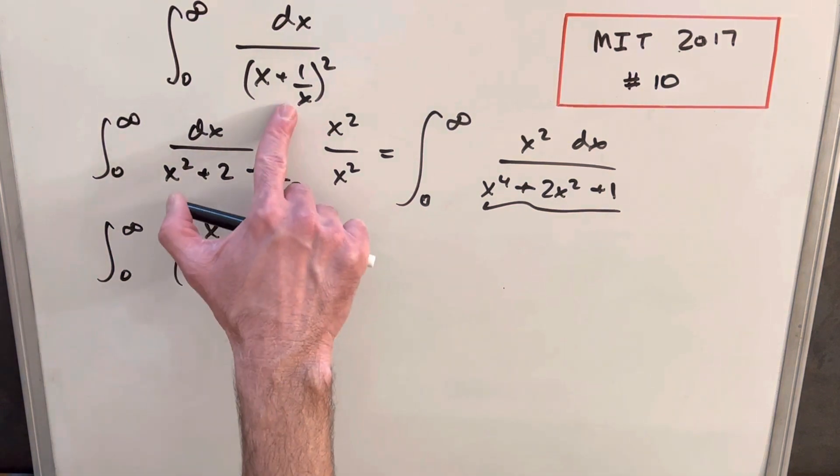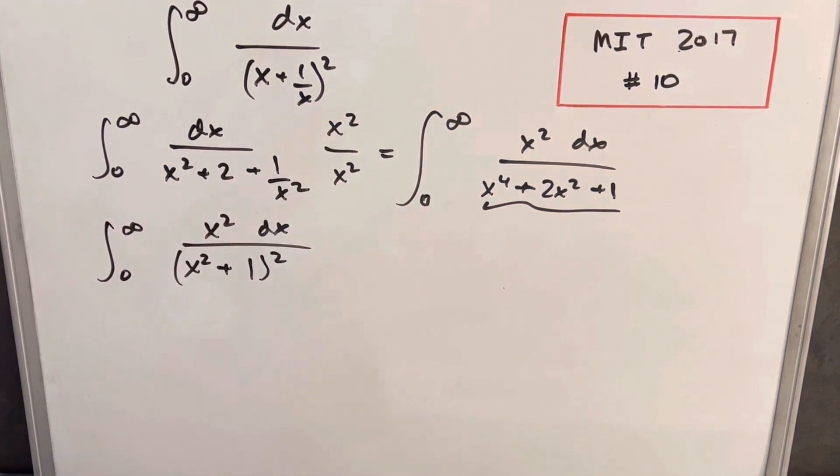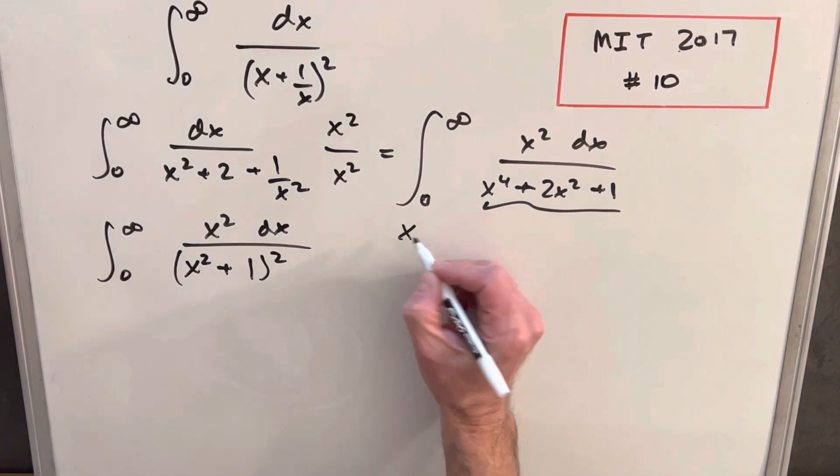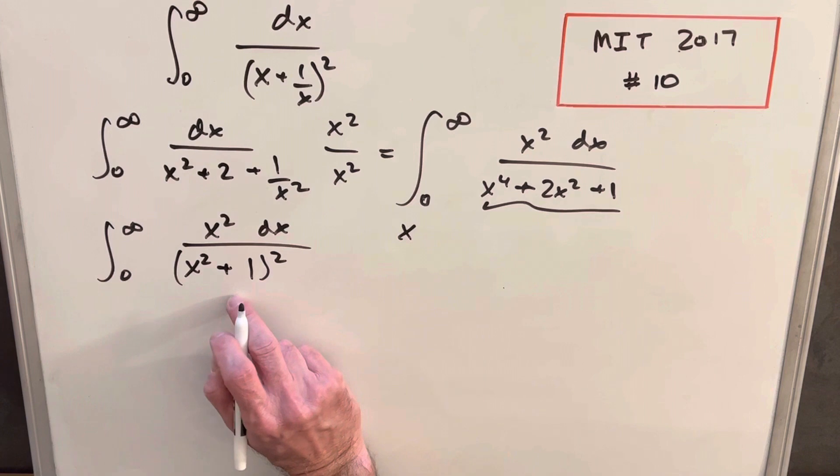So alternatively, you could just skip expanding it and just multiplying the x squared right from the beginning and that would be a little quicker. And then from here, what I'm going to do is a trig substitution. As you can see with this x squared plus 1 form, it looks good for substituting for tangent.